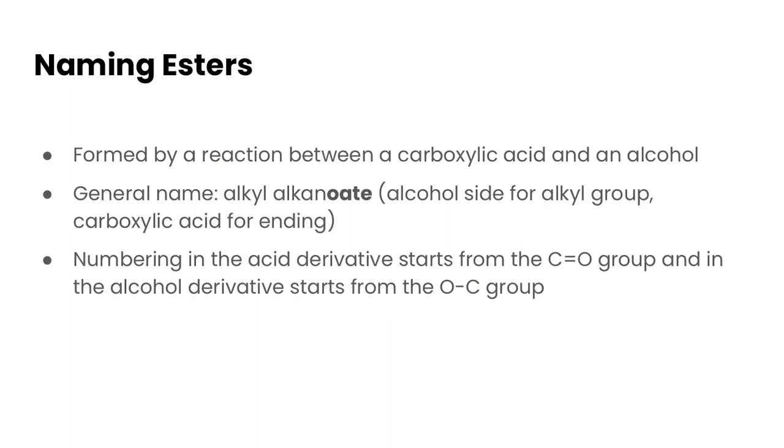Now naming esters is slightly different than anything else we've seen because they're formed by a reaction between two classes of molecules - carboxylic acids and alcohols. So they're going to take the general name of alkyl alkanoate. The alkyl will belong to the alcohol side of the group, and then the alkanoate is the second part of the name, and that belongs to more of the carboxylic acid side of the molecule. You'll see what I mean when we do a couple of examples here. In terms of numbering, for the acid side of the molecule, it'll start from the carbonyl group, and then from the alcohol derivative, it's going to start from the oxygen or the oxygen joined to the next carbon.